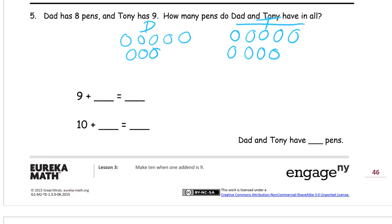I'm going to scoop one of dad's pens in with Tony's pile. Tony's nine plus that one from dad is ten. When dad still has seven, right, because he went from eight to seven. So it's ten and the seven here, seventeen. Dad and Tony have 17 pens.